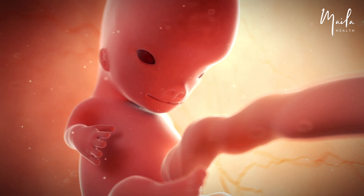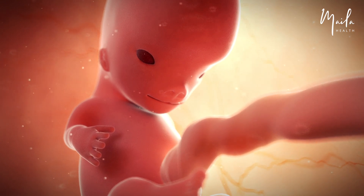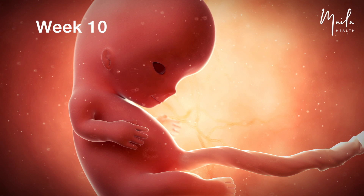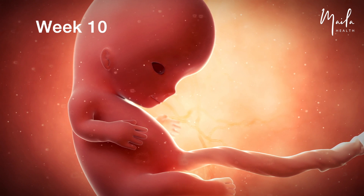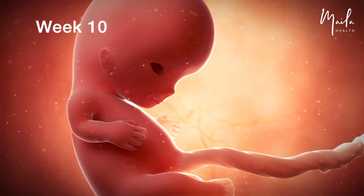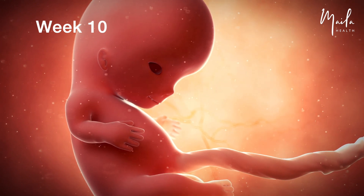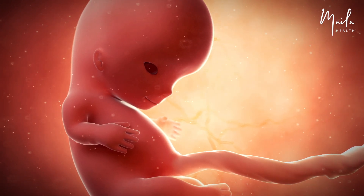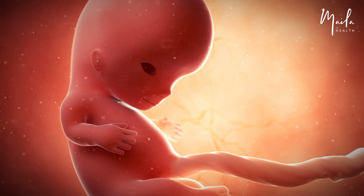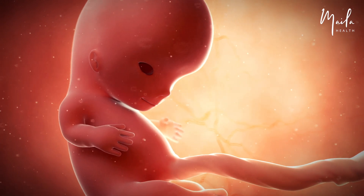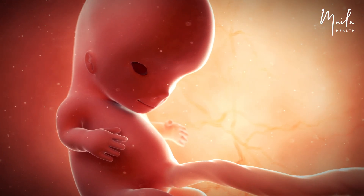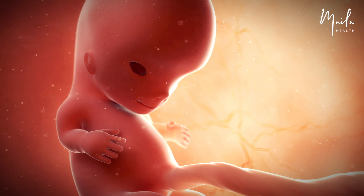Sexual differentiation starts with the internal reproductive organs. At ten weeks, the embryo's head now contains the major brain structures. The brain grows and expands as it produces 250,000 new neurons each minute.